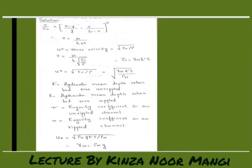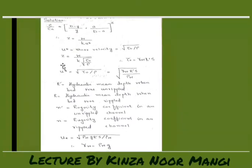So that's the formula: C upon Ca equals (D minus Y) into A upon (D minus A) raised to power Z. Here Z equals W upon K U star. The shear velocity is the ratio of tau naught to rho, so Z equals W upon K under root tau naught upon rho, where tau naught equals gamma W R dash S.